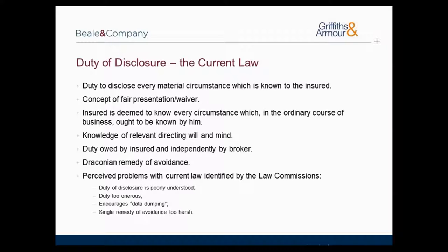On the proposal form the insured is asked whether they have burglar alarms at the warehouse and answers yes. In fact, at the time of completing the proposal form the insured hadn't yet installed burglar alarms — the intention was to install them but they forgot to do so. A few weeks later, an electrical fault causes a fire and part of the warehouse suffers fire damage. The insured makes a claim under their policy. The insurers' loss adjuster visits and notes no burglar alarms have been fitted. Even though the damage was not caused by the failure to install burglar alarms, the insurers could — if they could demonstrate the misrepresentation induced them into entering the contract — avoid the policy altogether.